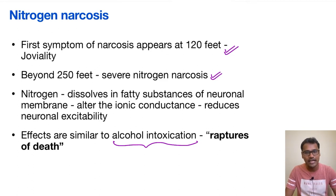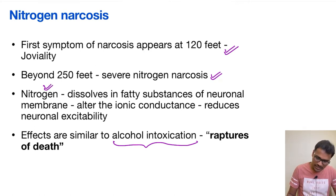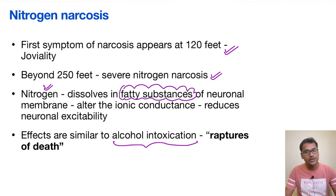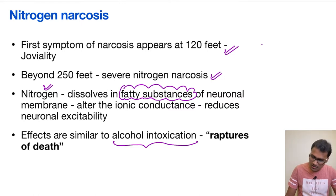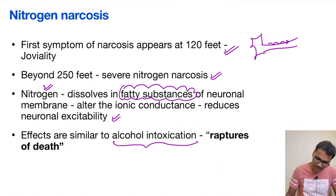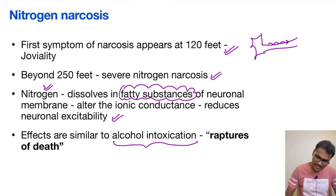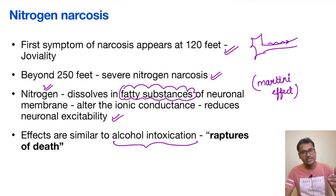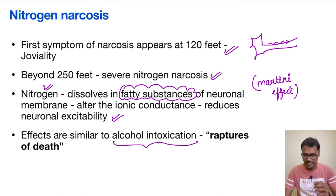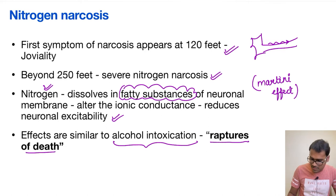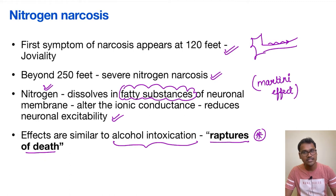Nitrogen is not alcohol, but it produces a similar intoxication effect. Nitrogen dissolves in fatty substances, and since all neuronal membranes contain fatty substances, nitrogen dissolves in them and alters ionic conductance. The ionic conductance of the entire nervous system is affected, reducing neuronal excitability. This is also called Martini's Effect — for every 20 to 30 feet the person descends, it is as if he takes one more martini shot. This is also called Raptures of Death, and it is very dangerous to life.